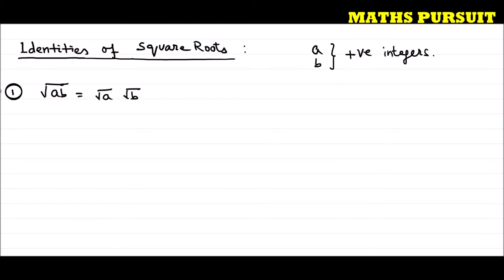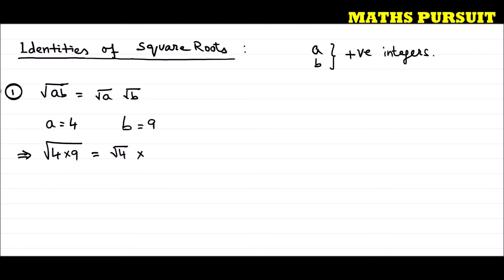For example, if A = 4 and B = 9, we can write √(AB) = √(4×9) = √4·√9 = 2×3 = 6. When we considered A = 4 and B = 9, root over of 4 into 9 gives the answer as 6. Hope you understood this.